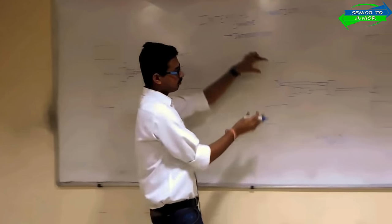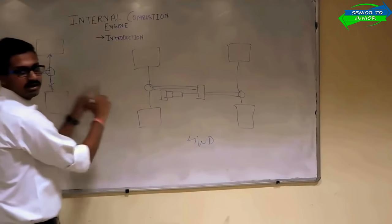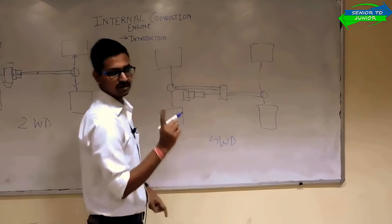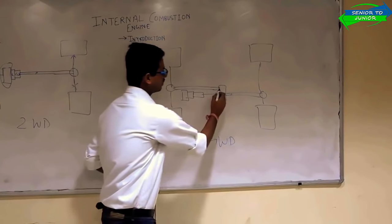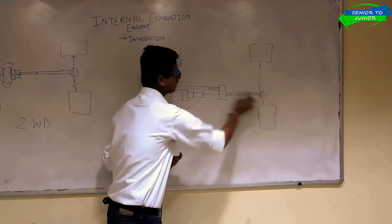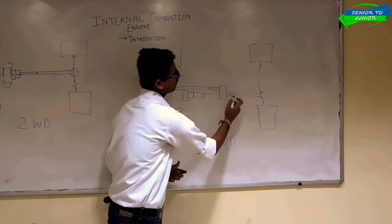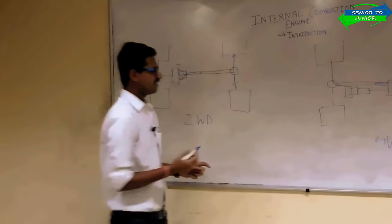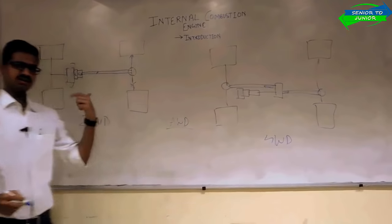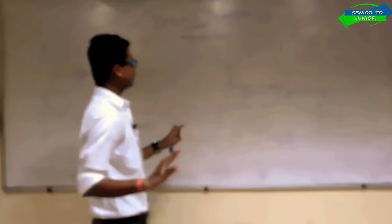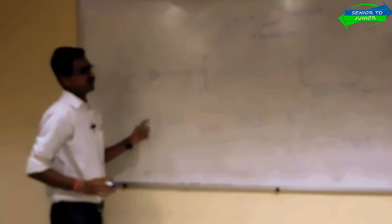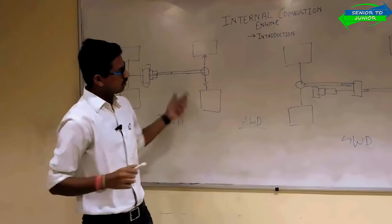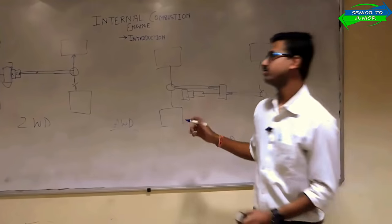In four-wheel drive, both wheels get power from the engine. There is one additional part — the transfer case — added to the four-wheel drive. The transfer case transmits power to the rear wheels and also to the front wheels. So there are two differentials: the transfer shaft delivers power to the rear differential and the front differential, and from the differentials we get power to all four wheels. There is one more type called AWD — all-wheel drive — which I will cover in the next lecture. My main motivation to draw this was so you know where the engine is located, because I am teaching internal combustion engine.